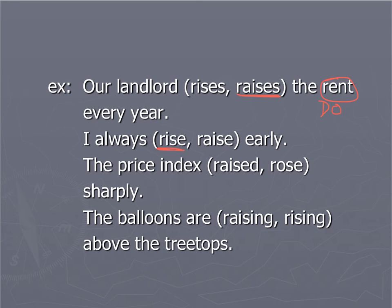For number three, we have to use a past form, the price index, and we're going to say rose sharply. Again, no direct object. And then the last one, the balloons are, we want to say rising. We need a present participle form because we have a form of be in front of it. So those are the forms of rise and raise.